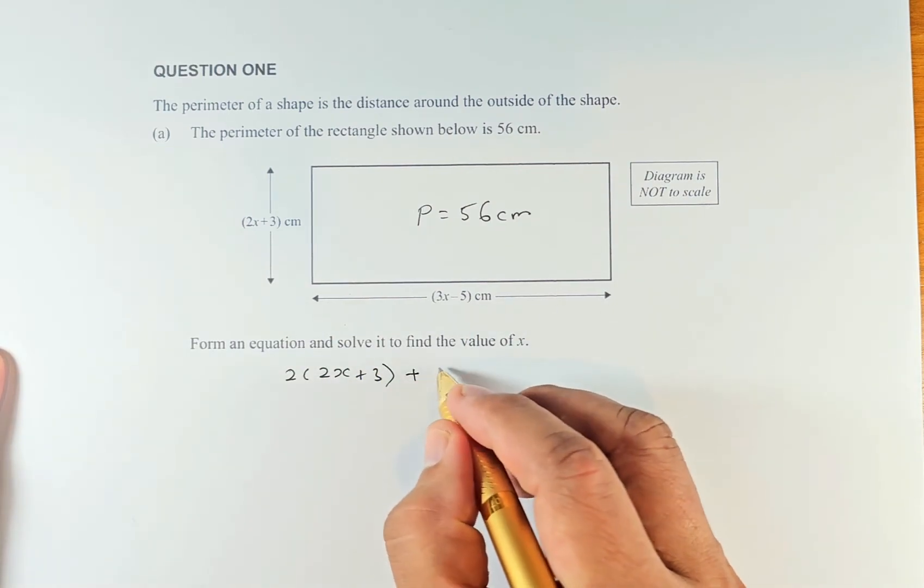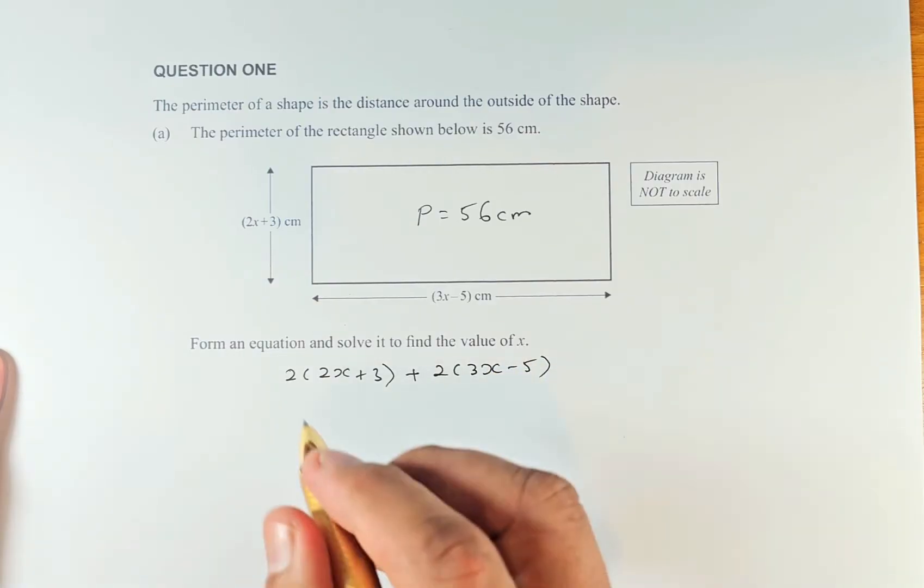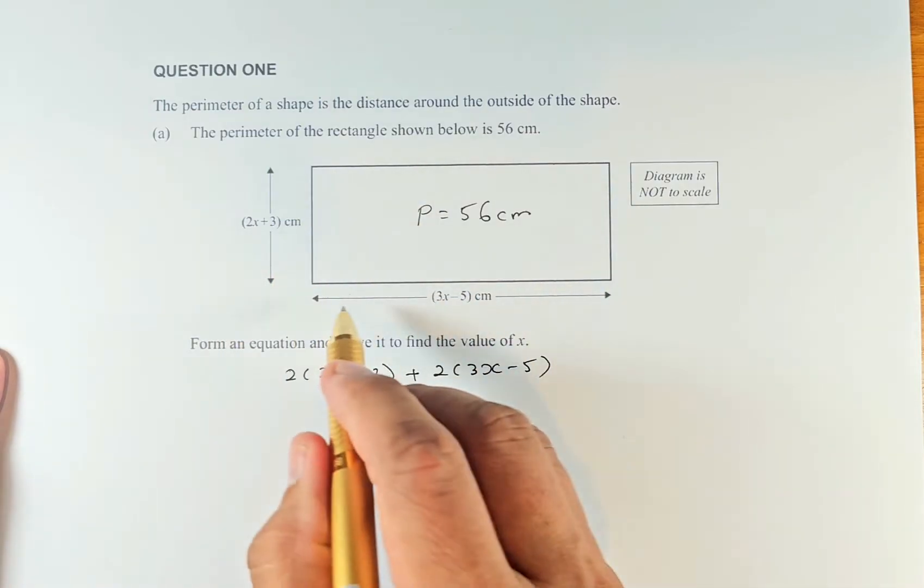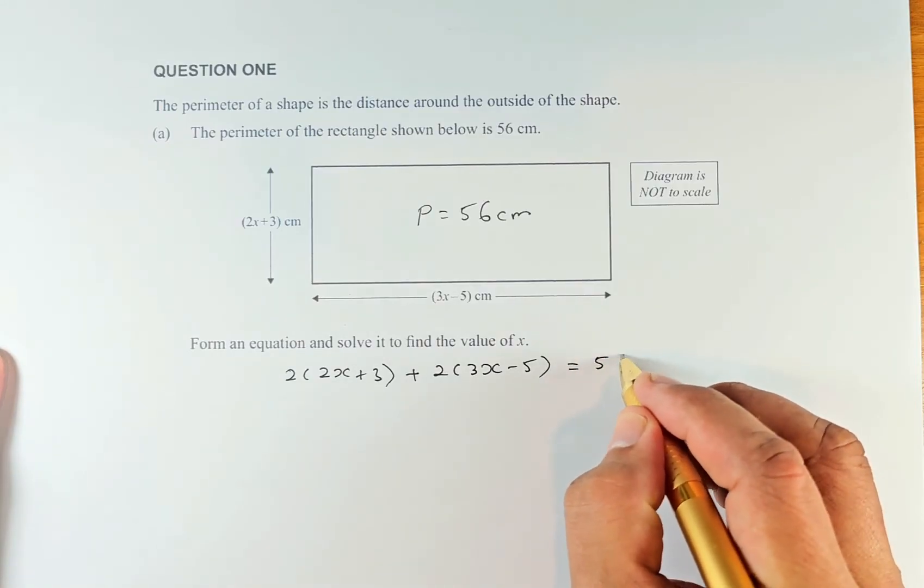Then we put plus twice the 3x minus 5, and that perimeter equals 56 centimeters because there are two of each side.